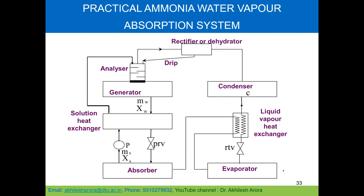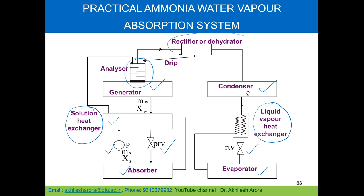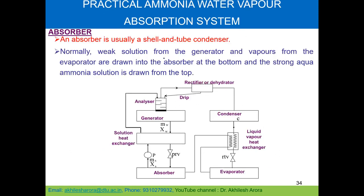In the practical vapor absorption system, additional components have been introduced: a liquid-vapor heat exchanger, a solution heat exchanger, an analyzer, and a rectifier/dehydrator — none of which were present in the basic system. The absorber, pump, pressure reducing valve, generator, condenser, refrigerant throttle valve, and evaporator remain. Let us examine the functions of these new components.